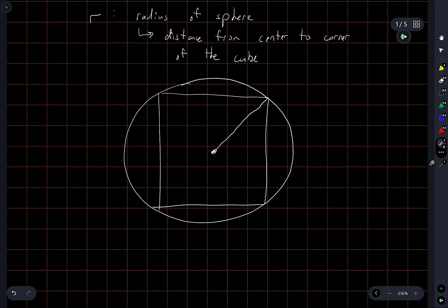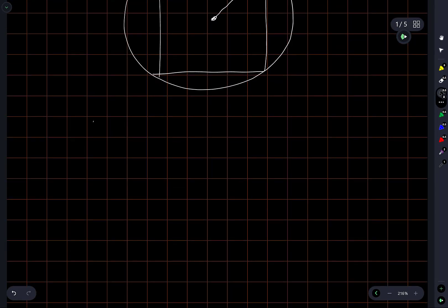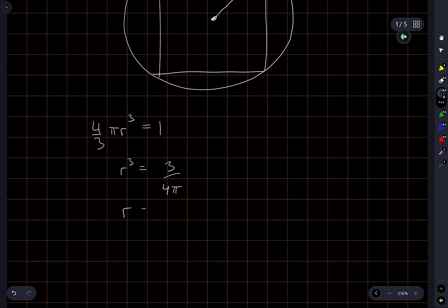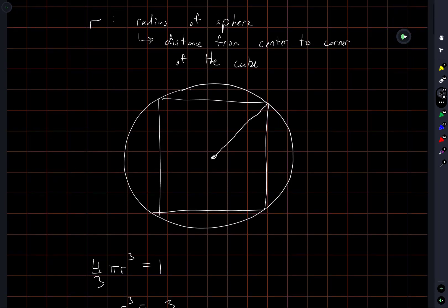We want to find the radius of a sphere that has unit volume. The formula is 4/3 · π · r³ = 1, so r³ = 3/(4π), meaning r = (3/(4π))^(1/3). This r is equal to the distance from the center to a corner of the cube.